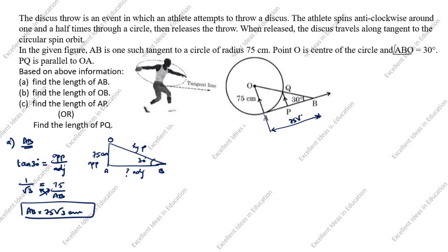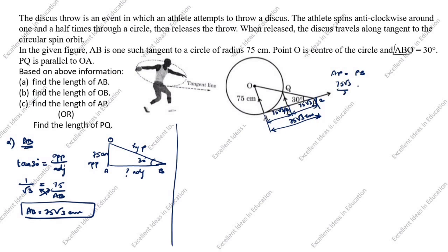So AB = 75√3 centimeters. P is the midpoint of AB, so AP = 75√3 divided by 2. Therefore, AP = 75√3/2 centimeters, and BP = 75√3/2 centimeters as well.